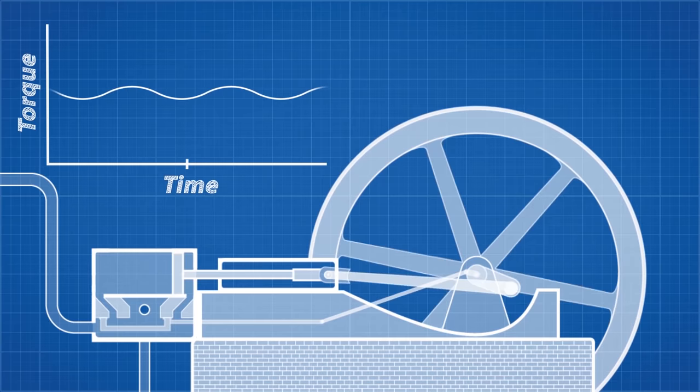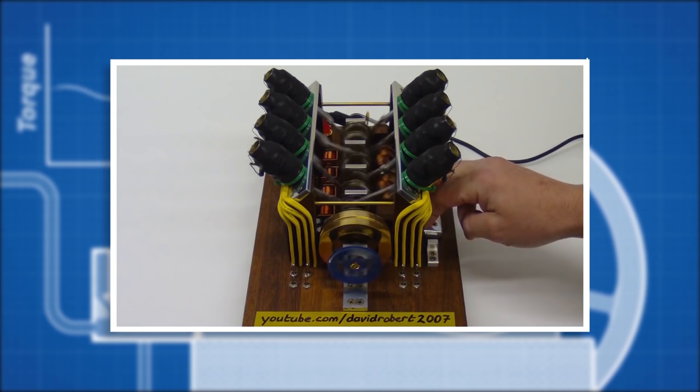David Robert demonstrates this beautifully with the V8 solenoid engine of his own creation. Here you can see the engine will continue to rotate without additional power, but the engine comes to a dead stop without a flywheel attached.